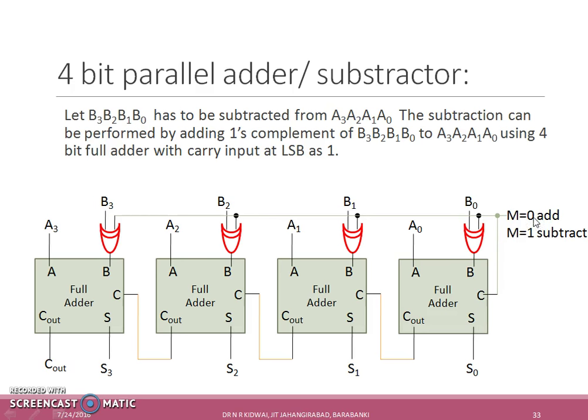When M is equal to 0 the XOR output will be equal to input B and carry will be 0 at the first stage. So the circuit will act as a 4-bit parallel adder.